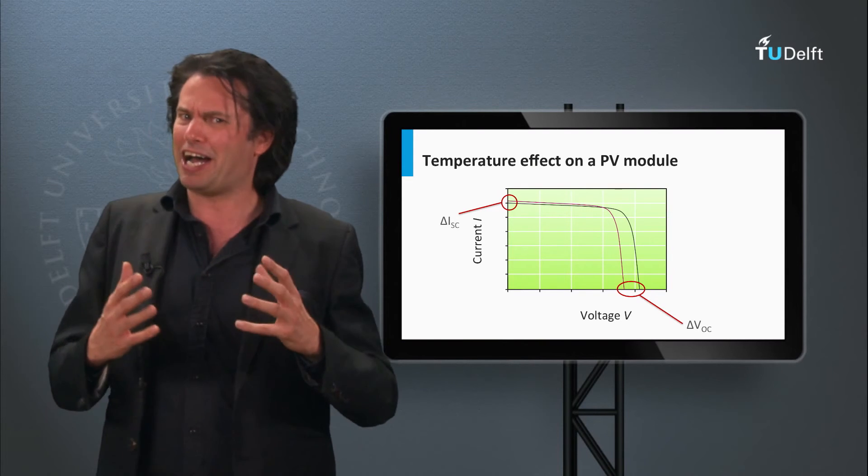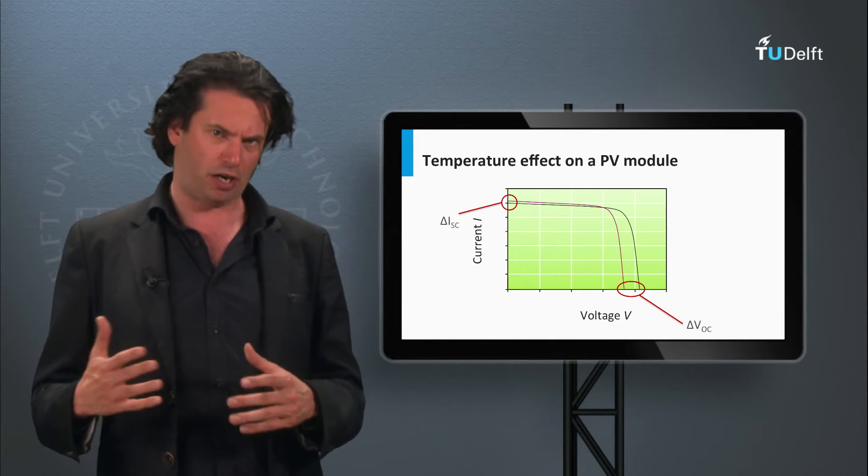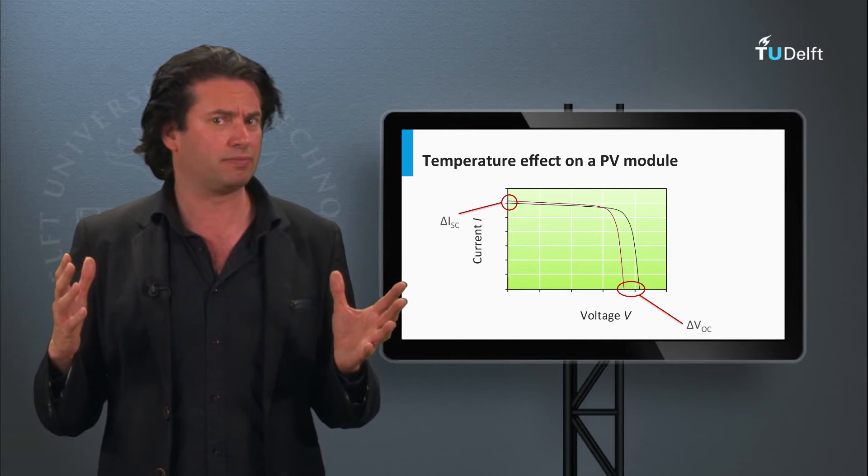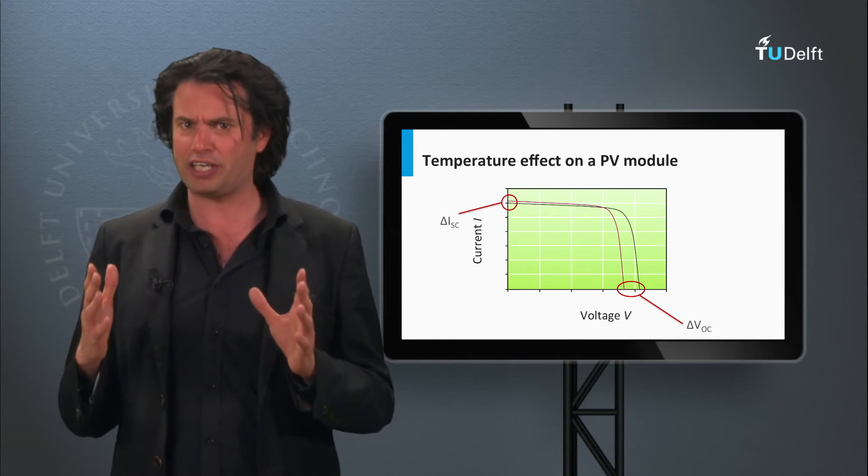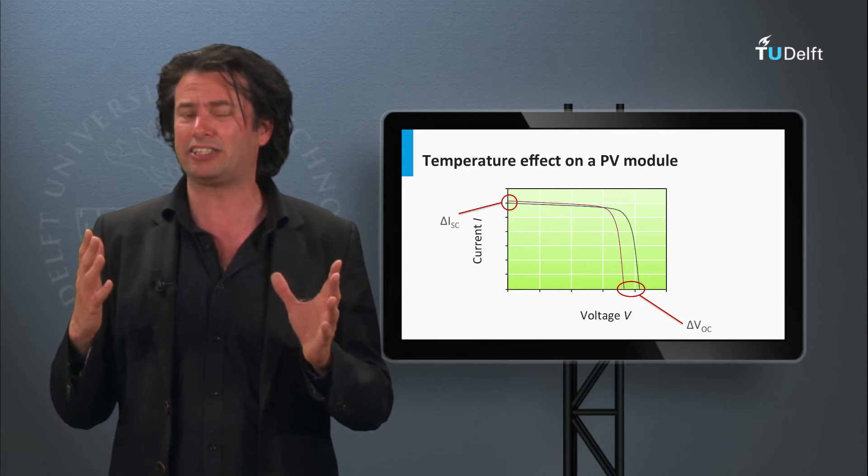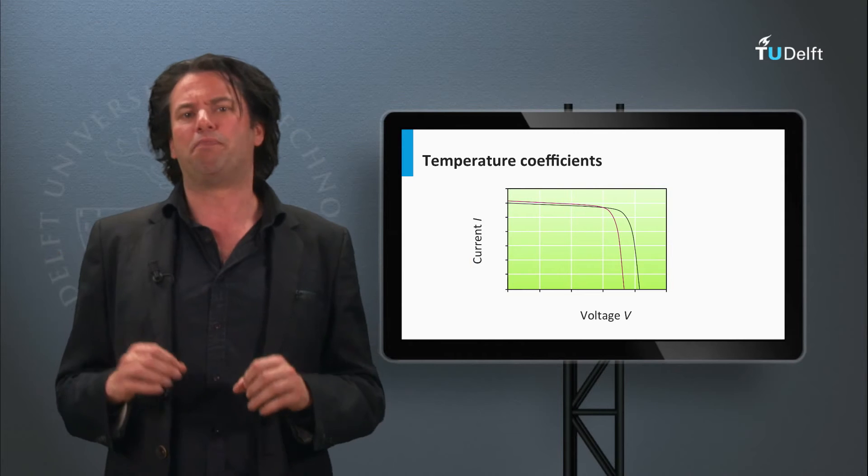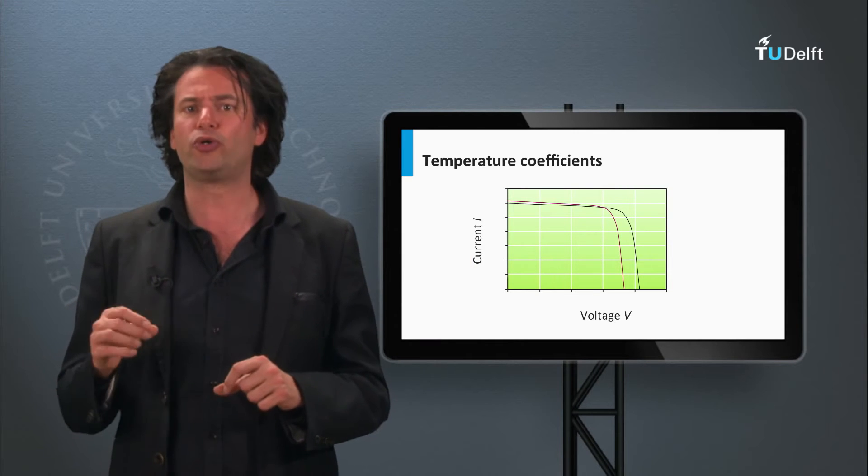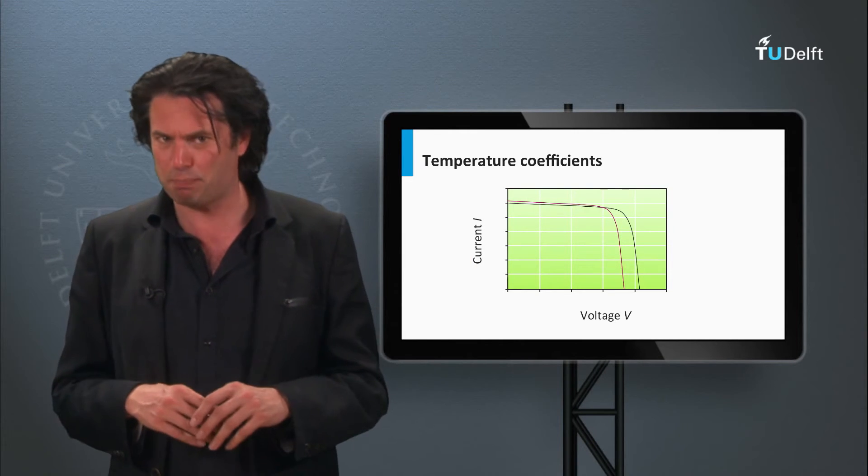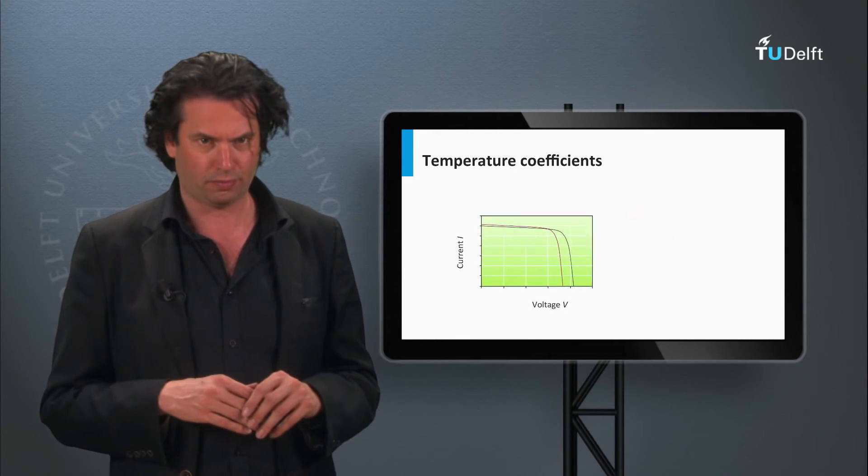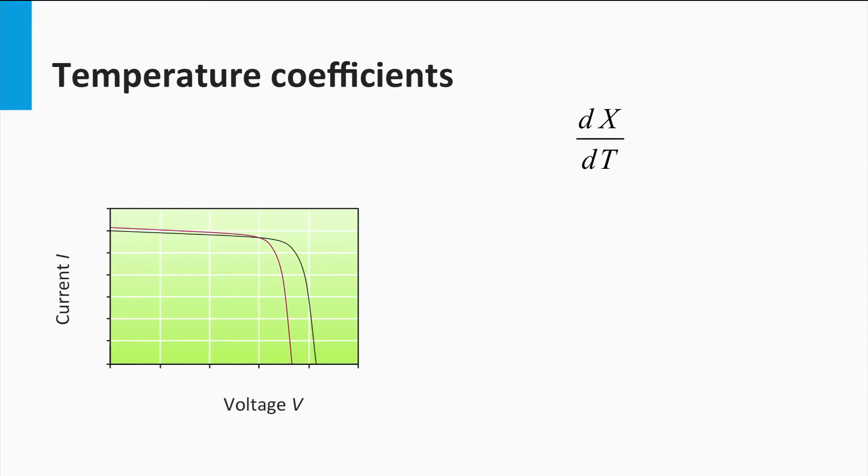So now you have an idea of the effect of temperature on the PV output. But how do we quantify this effect? If the temperature of the PV module were to increase by 10 degrees Celsius, how would the output be affected? Well, the PV module manufacturers include what are known as the temperature coefficients in the datasheets of the commercial modules.